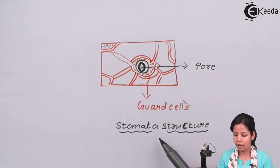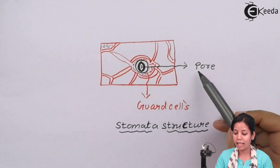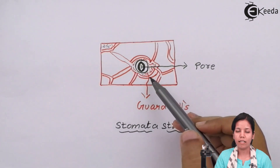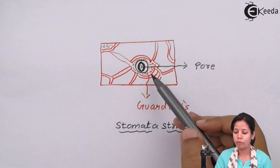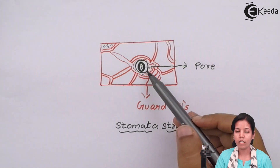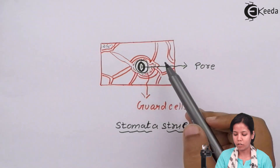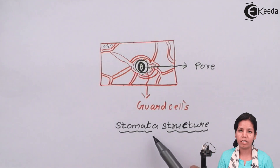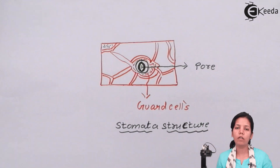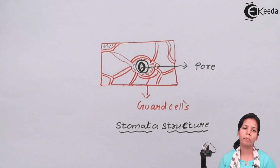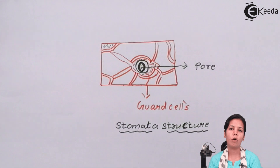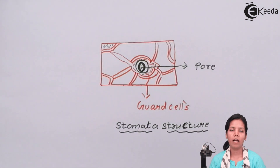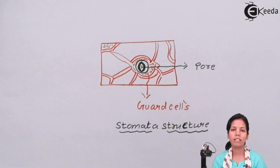This diagram represents the structure of stomata showing the guard cells and the pores. These guard cells open when the sun's energy falls on the leaf surface, and their opening causes the exchange of materials as well as transpiration. The pores of the guard cells are present on the upper surface of a leaf. In this part of the chapter we have studied about the structure of stomata and its functioning. I hope you all are clear about this concept.